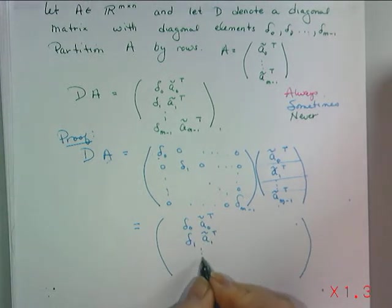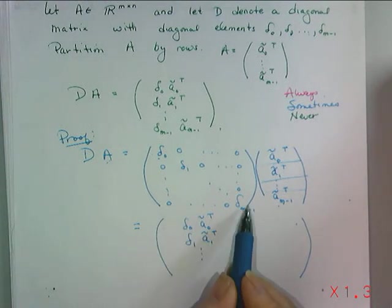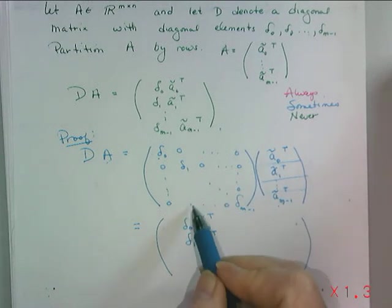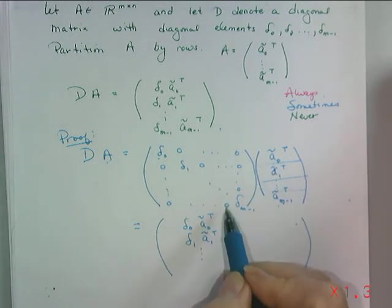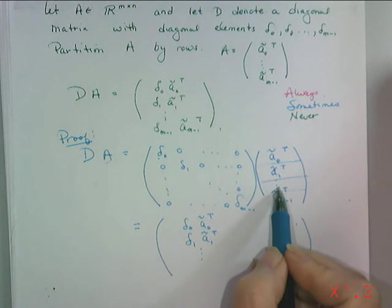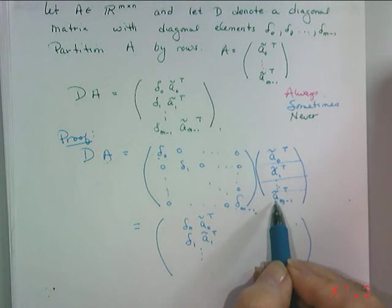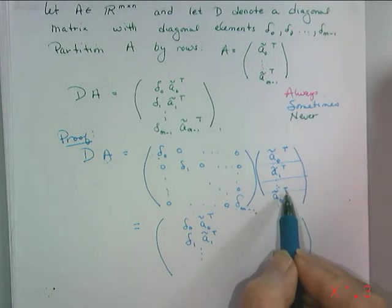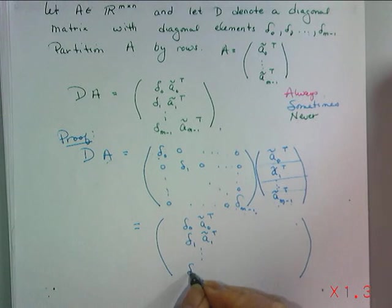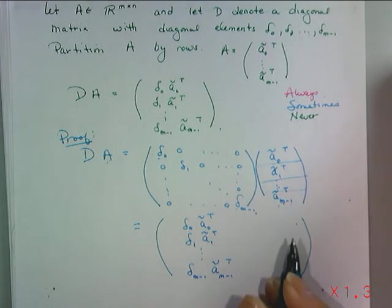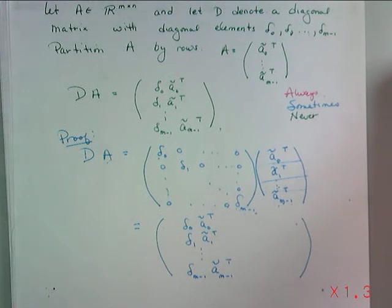And we would continue this. The last row will be zero times the first row of A plus zero times the second row of A plus and so on zero times the next the last row of A plus delta M minus one times A twiddle M minus one transpose. So that's delta M minus one times A twiddle M minus one transpose since all the terms except that are zero.